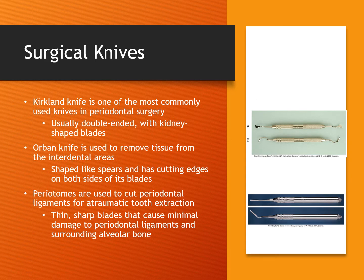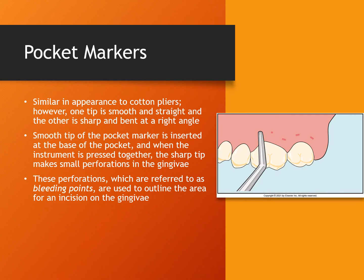The most commonly used knife in periodontal surgery is the Kirkland knife. It is usually double-ended with kidney-shaped blades. The Orban knife is used to remove tissue from the interdental areas; it has a spear-like shape with cutting edges on both sides of the blade. Periotomes are used to cut periodontal ligaments during tooth extractions. Pocket markers are similar in appearance to cotton pliers; however, one tip is smooth and straight while the other is sharp and bent at a right angle. The smooth tip is inserted at the base of the pocket, and when pressure is applied, the sharp tip makes small perforations in the gingiva. These perforations, called bleeding points, are used to mark the area for an incision on the gingiva.